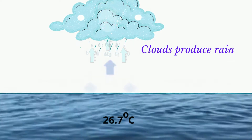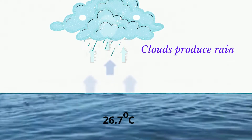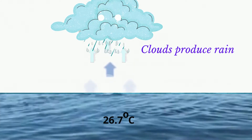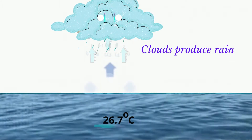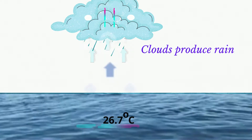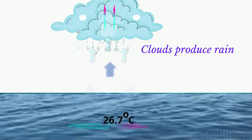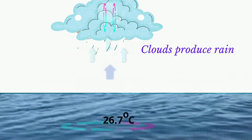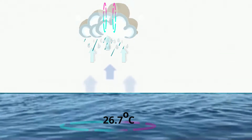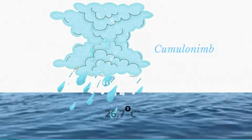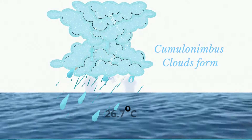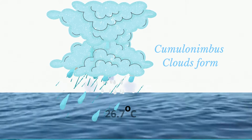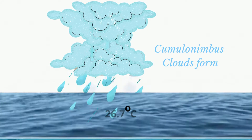As the water droplets collide with each other in the clouds, they grow in size to form raindrops, which will in turn be pulled down under the influence of gravity to produce rainfall. The release of latent heat helps to fuel the system.